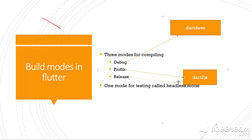Release mode is used when you have to release your app. You don't need any debugging information or any performance profiling information, so debugging is completely switched off. Assertions and service extensions are also completely disabled in release mode.